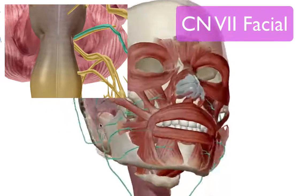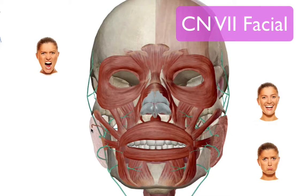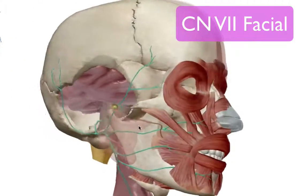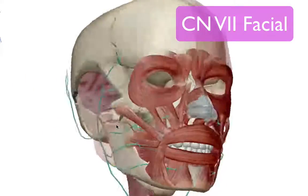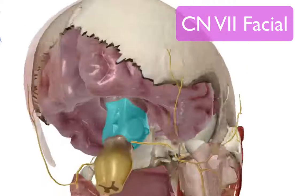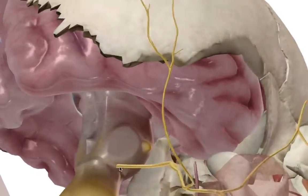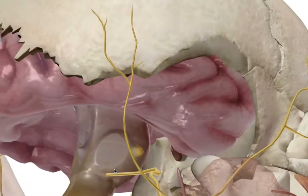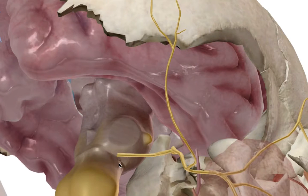The facial nerve controls our facial expressions — sad, happy, confused, excited — whatever the case may be. I have a video dedicated to these particular muscles, so we won't spend too much time on the muscles and will focus more on the actual cranial nerve. Its origin is on the lateral aspect of the pons, just on the ridgeline of the pons and medulla oblongata.